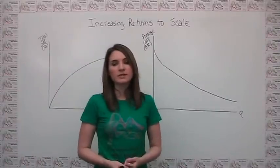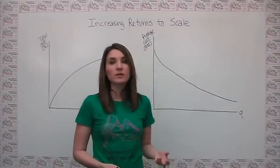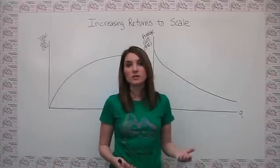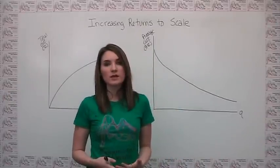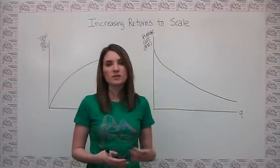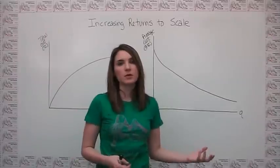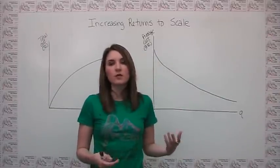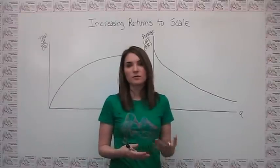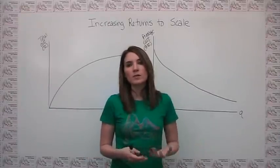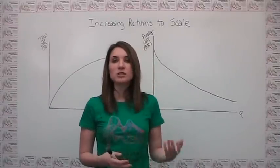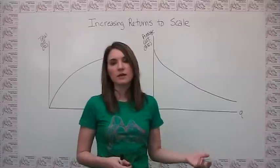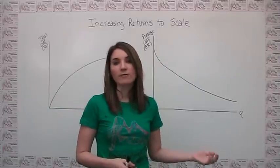In practice, we might observe increasing returns to scale for a firm either literally because they're getting volume discounts on the materials used in production, or alternatively because as they get bigger they're more able to specialize labor. For example, they don't have their factory workers also doing some bookkeeping and vice versa. They're able to use people in the most effective way possible, or they're able to buy more specialized machinery, which you can think about as specialization of capital, which will also allow them to make their product at a lower average cost.